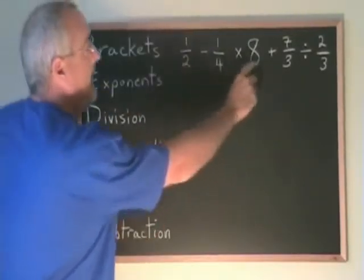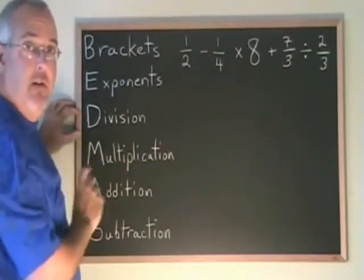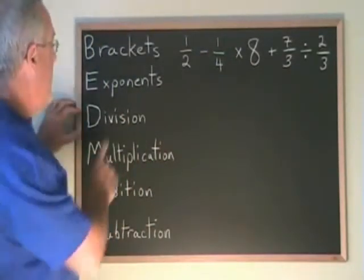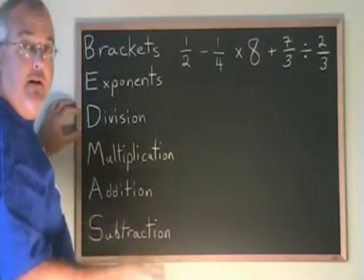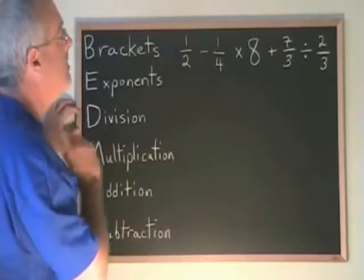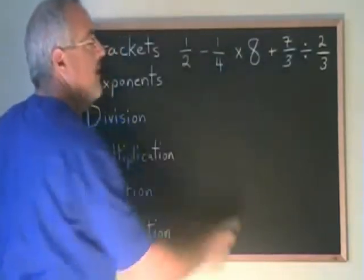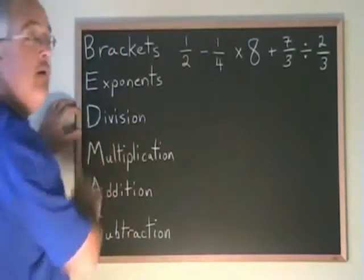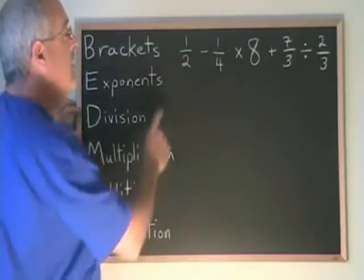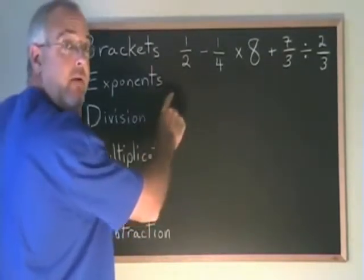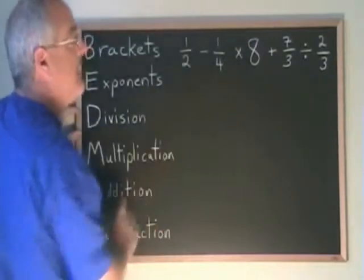We don't have any brackets this time, and exponents are not involved in this problem. We have division and multiplication, which are in a tie. So we look for our divisions and multiplications — we see a multiplication here and a division there. We do not have to do the division first; we have to do whichever one we come to first when we read from left to right. And that is this multiplication.